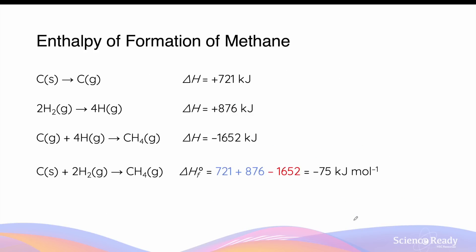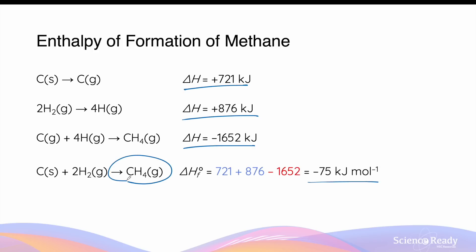Let's combine the values together. We have the endothermic enthalpy change values of the first two steps and the exothermic enthalpy change value of the third step. When we add them together, we'll get the total net change in enthalpy of the formation of methane from its constituent elements in standard states.